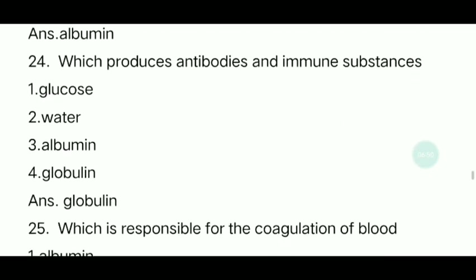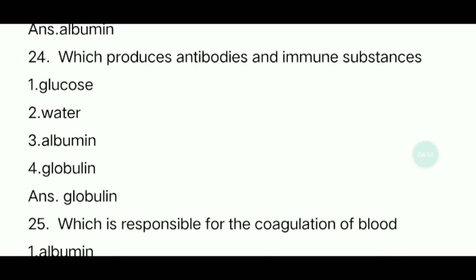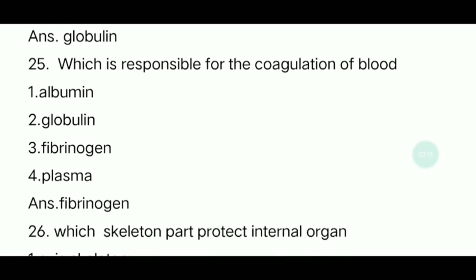Twenty-fourth question: Which produces antibodies in the immune system? The answer is globulin. Globulin produces antibodies in the immune system. Twenty-fifth question: Which is responsible for the coagulation of blood? The answer is fibrinogen.